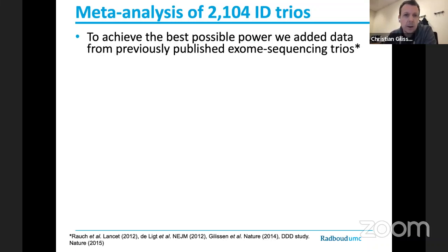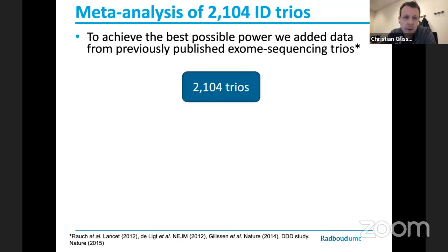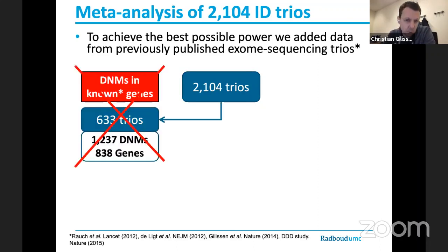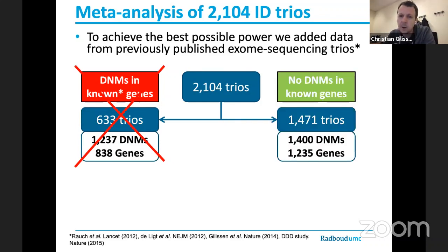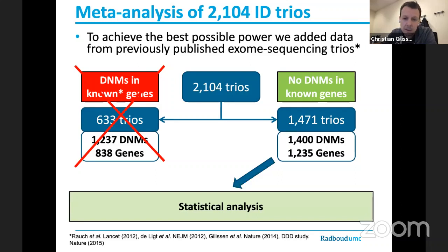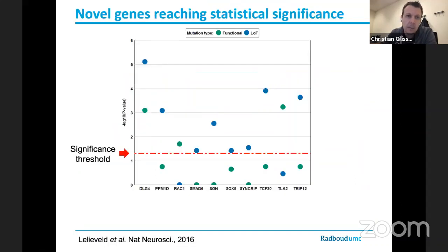We realize we are a little underpowered with 820 trios, even though that might seem like a lot. To achieve the best possible power we added published cohorts to our own, in particular the DDD study, giving us 2100 trios. To increase our power further, we removed all patients with a de novo mutation in a known gene, leaving about 1500 trios in which we can look for new genes. Applying our statistical model, we get a ranking of 10 genes for which either functional mutations or loss-of-function mutations pass the significance threshold, meaning these genes have significantly more de novo mutations in our patient cohort than we would expect by chance.